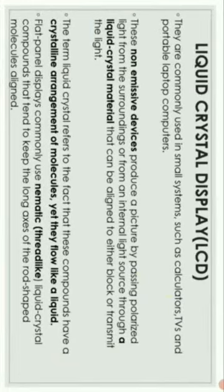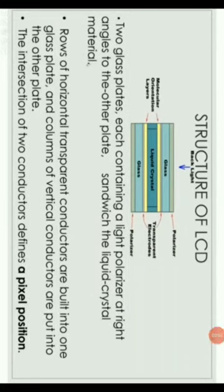The arrangement is crystalline; the molecules behave like liquid molecules. In general, we use a flat panel display. To drive the rod-shaped molecules into alignment. This is the structure of LCD. It has two glass plates with a liquid crystal layer in between. One glass plate is a polarizer and another contains the liquid crystal. The glass plates have transparent electrodes. Two glass plates contain polarizers at right angles to each other, sandwiching the liquid crystal material. Rows of horizontal transparent conductors are built into one glass plate and columns of vertical conductors are put into the other plate.